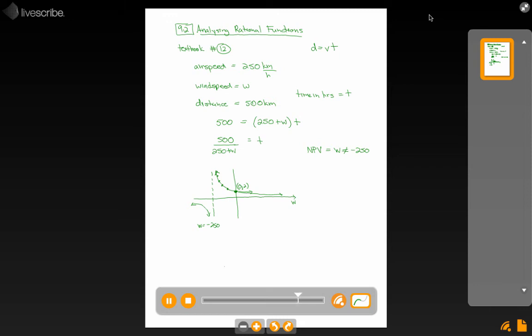It also makes sense that on this graph, this negative 250 and anything to the left of it really is not relevant to us. We're not going to talk about winds faster than that. And if you did try to fly in a wind that was greater than your airspeed, it means it's going to blow you backwards. And that's why these negative times and negative wind speeds exist on the graph, but they're not relevant to our situation.